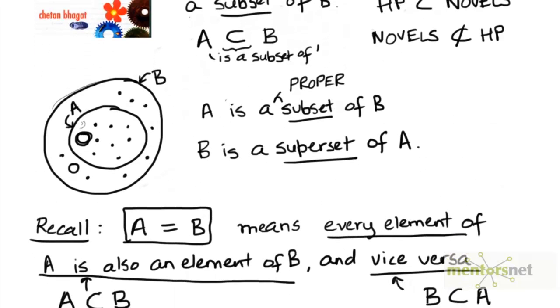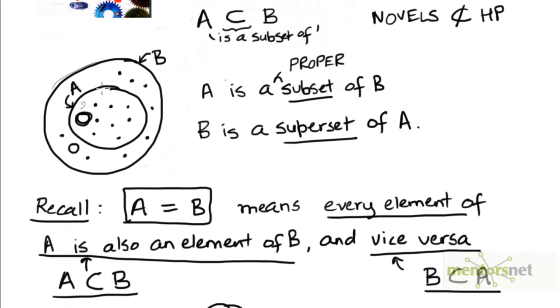But usually when we think of a subset relationship, we have in mind a picture of a set A which is completely contained within set B, which is not equal to B but which is smaller than B in size.